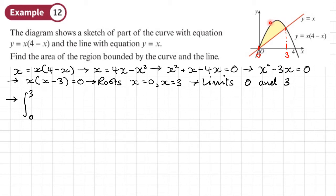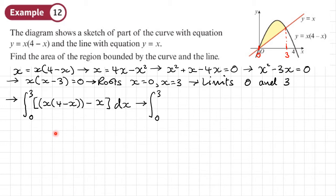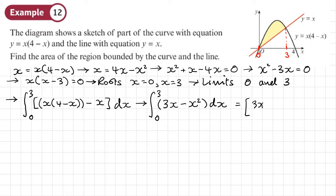My limits are zero and three. I want the equation at the top minus the equation at the bottom: that's x times (4 minus x) minus x dx. Working that out before integrating: 4x minus x squared, then subtracting x, leaves us with 3x minus x squared.